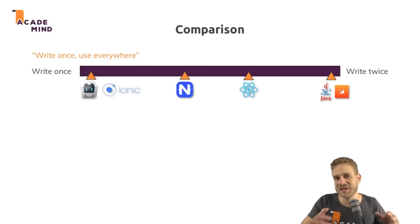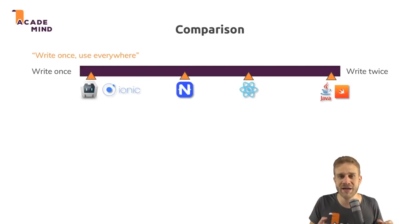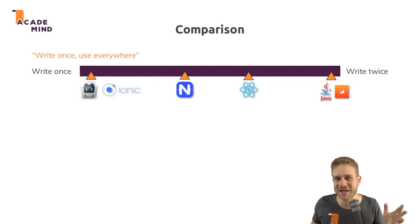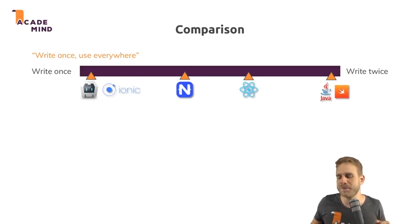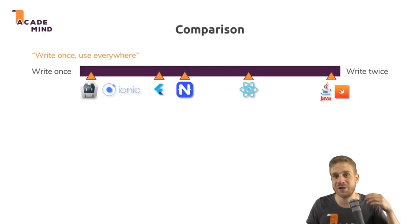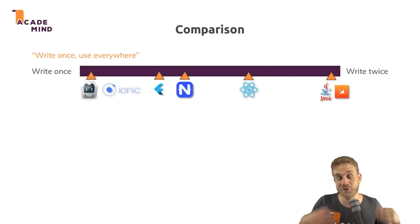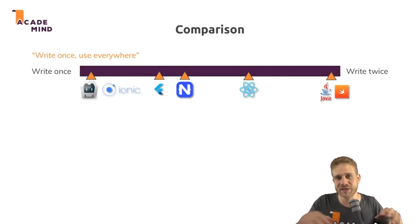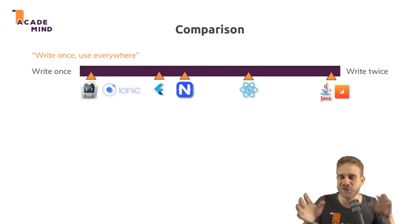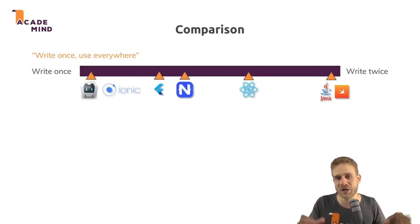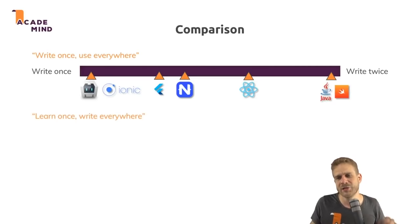NativeScript is a bit more on the write-once side because it has more adaptive components built in — it tries to give you the approach of reusing code and not embracing platform differences as much, though you can differentiate if you need to. Flutter is also on the write-once side, especially if you accept material design for both platforms — you write just one widget tree that you can reuse, and your logic can be reused too. So you don't have to do a lot of differentiation, though you can absolutely detect which platform you're on if needed.